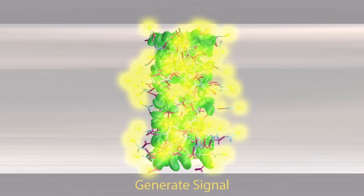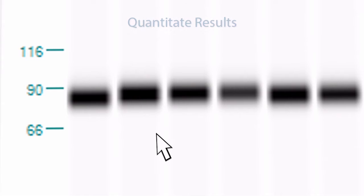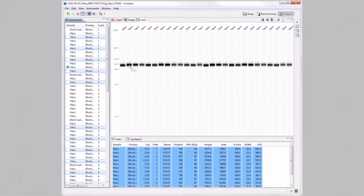This chemiluminescent reaction gives off light that is read by a CCD camera. Your quantitative results are automatically generated for you and reported by electropherogram or lane view.